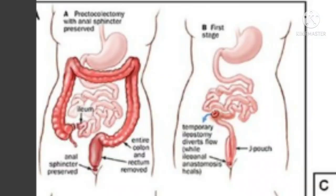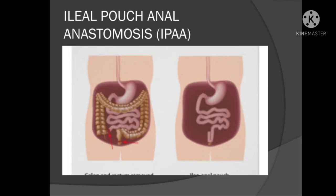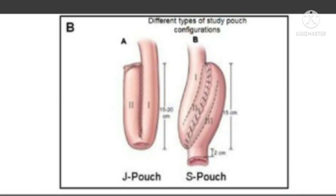Coming to the second question: in proctocolectomy, the whole colon and rectum are removed due to ulcerative colitis. An ileal pouch is created and an ileoanal anastomosis is done between the anal canal and that pouch. This is a precarious condition — you don't want this anastomosis to leak. So in the terminal ileum, proximal to the anastomosis, you make a loop ileostomy. This is a newly constructed road — you don't want fecal matter to pass over it. The fecal matter comes out from the loop, bypassing the anastomosis, protecting it. This is known as a protective loop ileostomy.